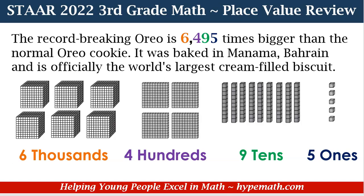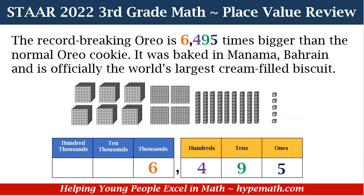We see for our place value blocks, we have 6 thousands blocks, 4 hundreds blocks, 9 tens, and 5 ones. We've also written it where we have the 6 thousands, 4 hundreds, 9 tens, and 5 ones. Now let's look and see what it looks like on our place value chart. On the chart, we see we have a 6 in the thousands place, a 4 in the hundreds place, a 9 in the tens place, and a 5 in the ones place.